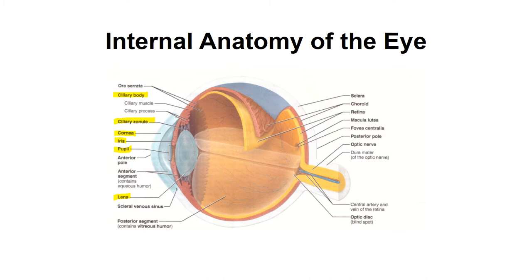The lens is held in place by the suspensory ligaments. You should also know the posterior chamber, or posterior segment, which is the back portion of the eye, and the anterior segment, which is the front part of the eye. Anything in front of the lens is the anterior segment, and it contains lots of aqueous humor — a watery fluid. Anything behind the lens is very gelatinous; that's our posterior segment, filled with vitreous humor.